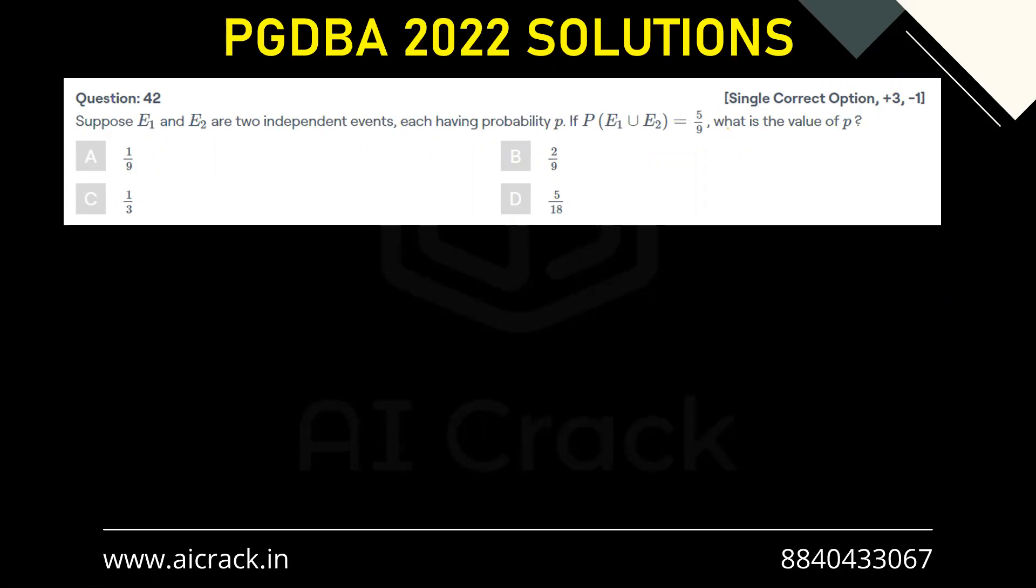So this is a very standard probability question. P(E1 ∪ E2) equals P(E1) plus P(E2) minus P(E1 ∩ E2). This is the formula, right?